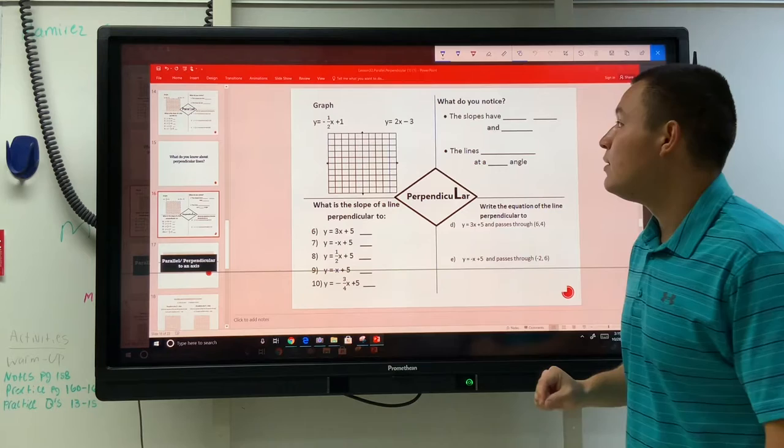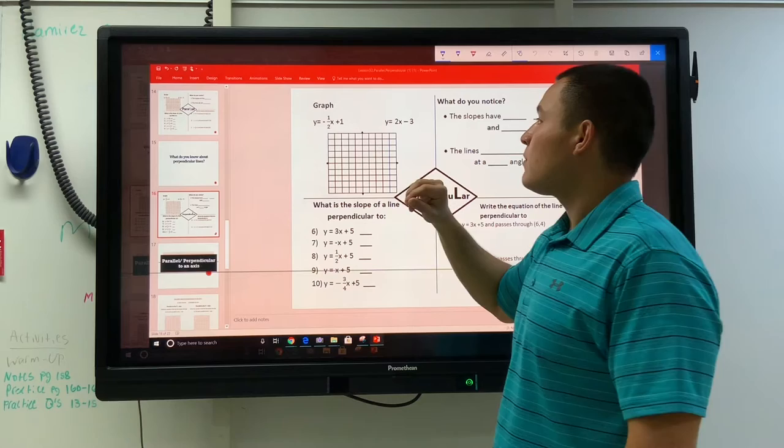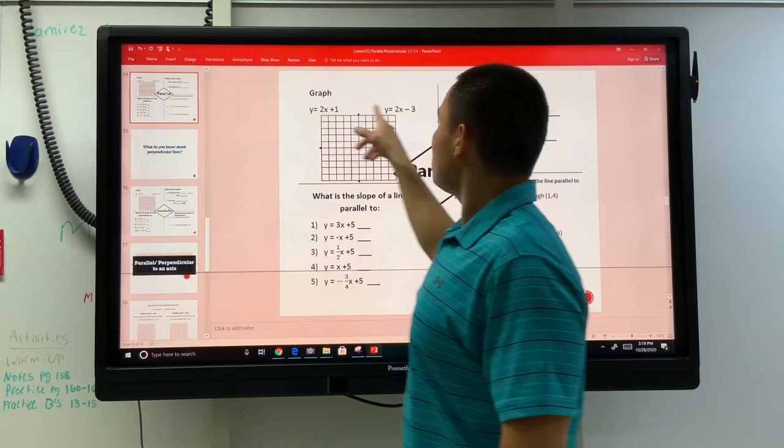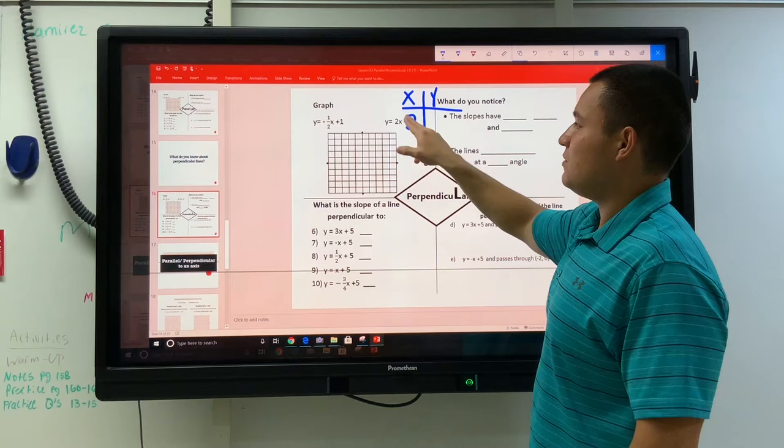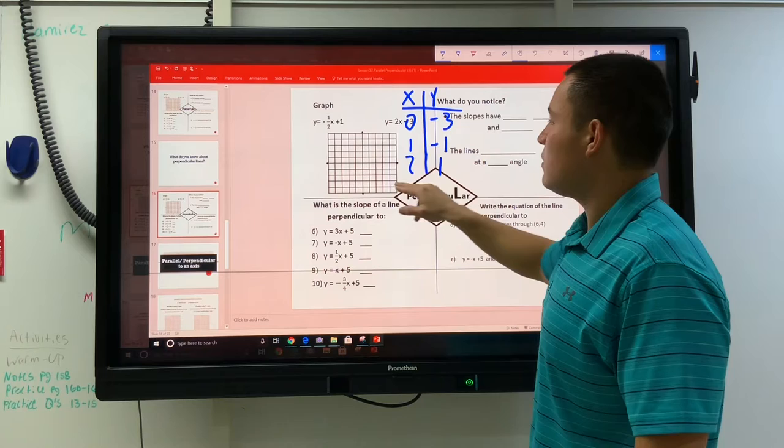1/2 x plus 1, 2x minus 3. Did we do 2x minus 3 in the last one? We did. So we can just copy those same points and not have to make the table again. I'll use my memory. You can just go back and copy the table. 0, 1, 2, negative 3, negative 1, 1. Let's make our axis.